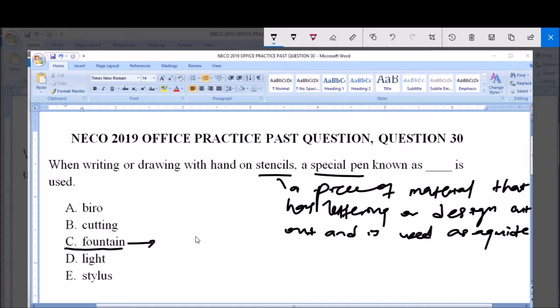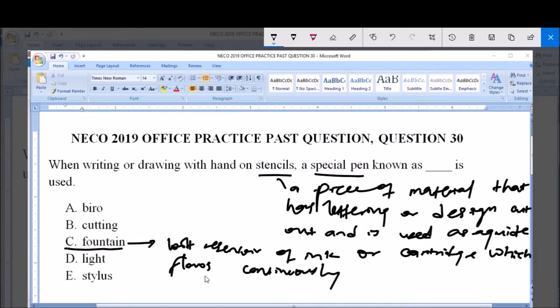Now, what is a fountain pen? A fountain pen is a pen with reservoir of ink or cartridge containing ink which flows continuously. That is a fountain pen.